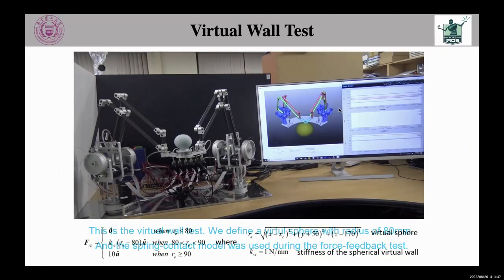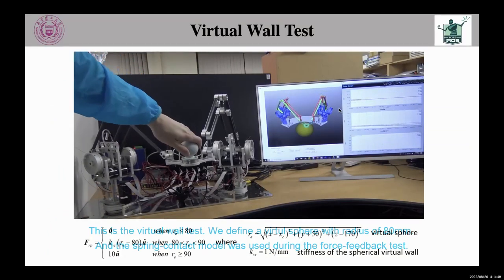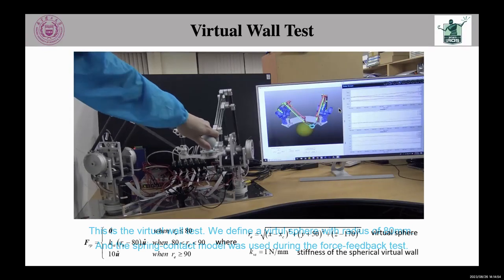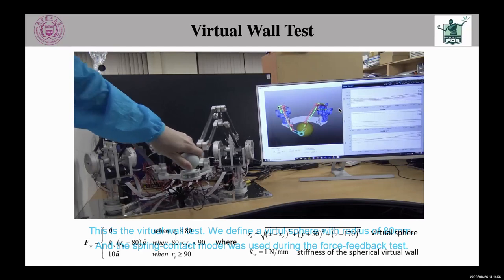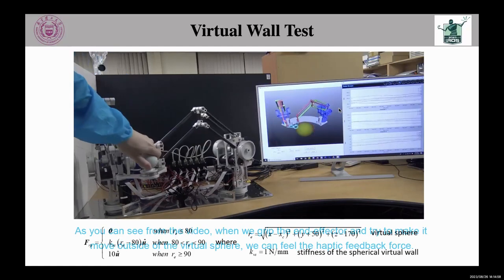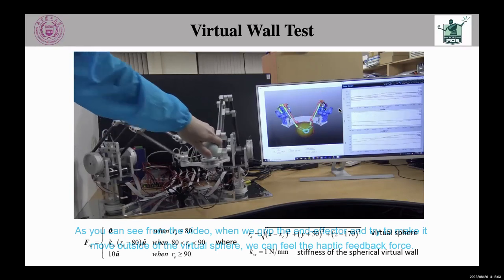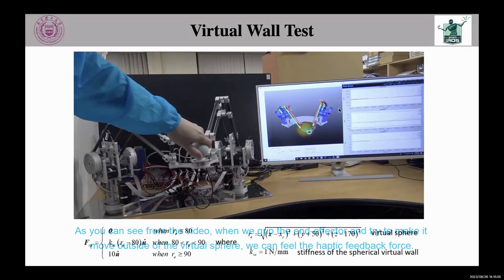This is the virtual wall test. We define a virtual sphere with a radius of 80 mm, and the spring contact model was used during the force feedback test. As you can see from the video, when we grip the end effector and try to make it move outside of the virtual sphere, we can feel the haptic feedback force.